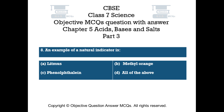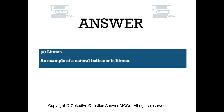Question number 8: An example of a natural indicator is. Option A: litmus. Option B: methyl orange. Option C: phenolphthalein. Option D: all of the above. The right answer is option A — litmus. An example of a natural indicator is litmus.